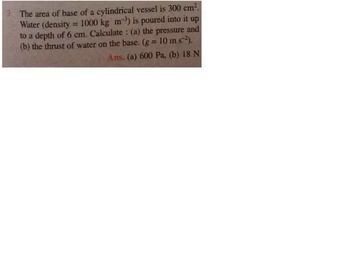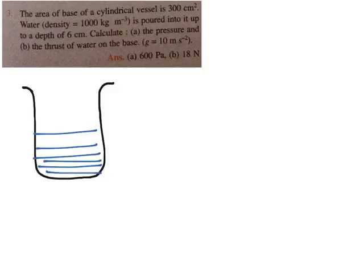Good evening friends, today we are going to do a problem on pressure on fluids or fluid pressure from ICC Concise Physics, chapter number six. The problem states: the area of the base of a cylindrical vessel is 300 centimeter square, water with a density of 1000 kg per meter cube is poured into it up to a depth of six centimeters. If we try to draw a vessel, water is poured into it up to a height of six centimeters from the bottom.